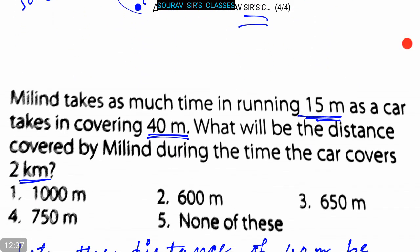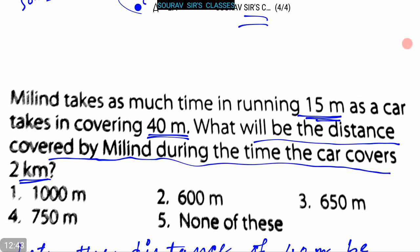So the distance covered by Melin during the time the car covers 2km is 750 meters. Here option 4, that is 750, is the correct answer. Thank you.